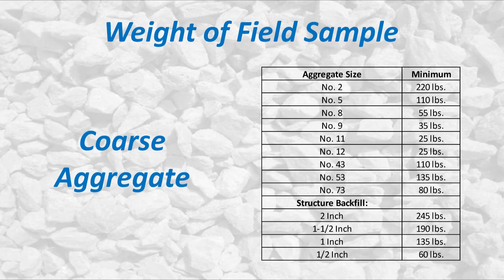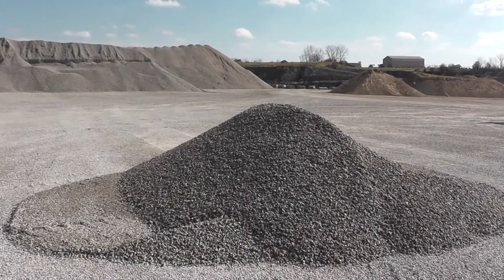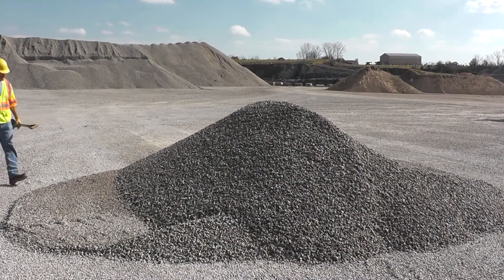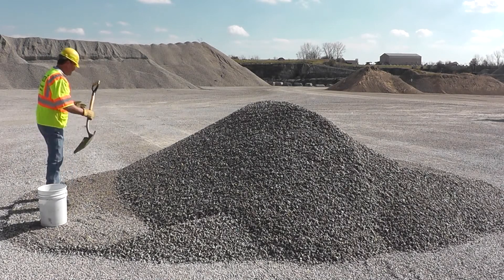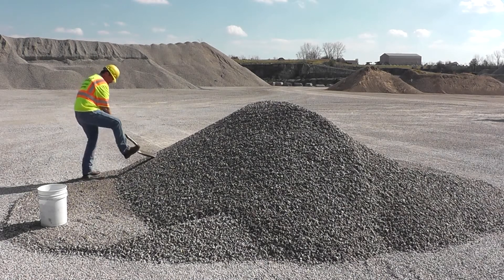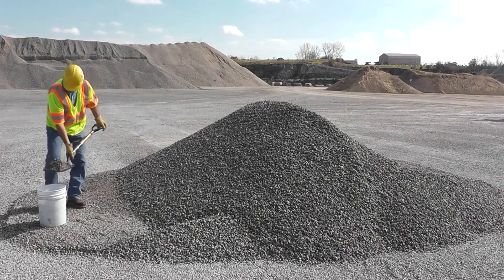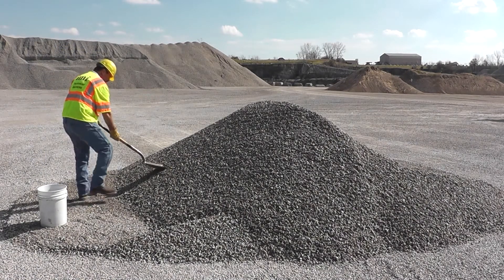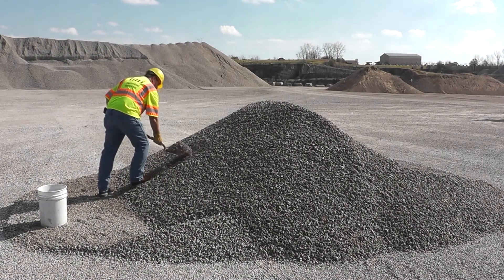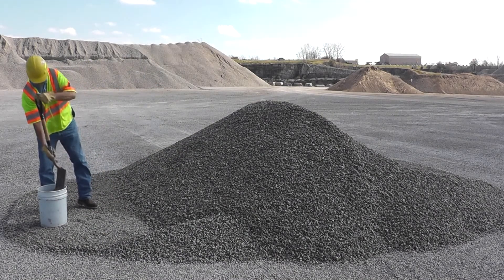For coarse aggregates, the minimum weight of the field sample depends on the maximum particle size of the material being inspected. As a rule, a larger top size material requires a larger sample. For example, a 25-pound sample of number two coarse aggregate would not be as representative as a 25-pound sample of number 11 coarse aggregate. The inspector shall insert the shovel horizontally into the sample pile, keeping the bottom of the shovel parallel to the ground until it reaches full depth, then carefully raise the shovel horizontally, taking care to keep as much of the sample as possible on the shovel. Each shovel full of material is placed into a container and taken to an area to be split down into the proper test sample size.